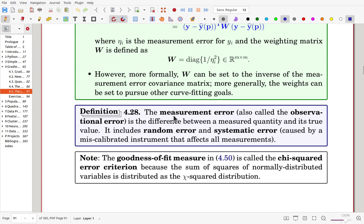The measurement error, which is called the observation error, is the difference between a measured quantity and its true value. It has two components: random error and systematic error. Random error comes out due to randomness and the systematic error is usually caused by a miscalibration of the instrument, so that it affects all measurements as a bias.